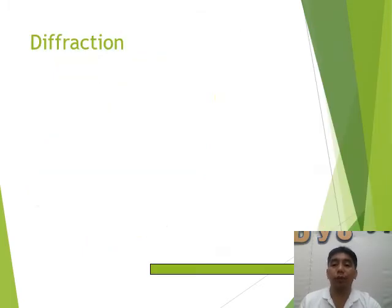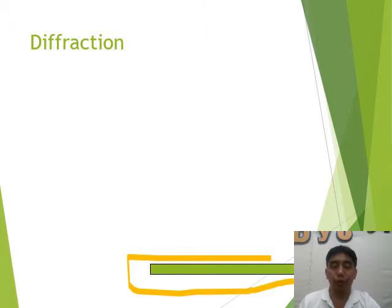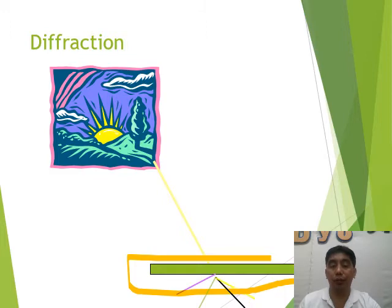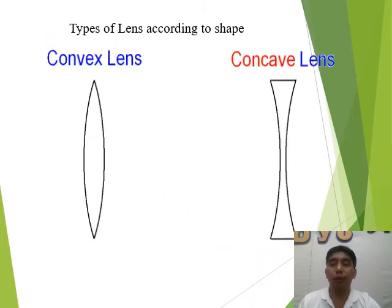Another behavior is diffraction. Diffraction occurs when, for example, the edge of a reflective or glass-surfaced table is involved — the ray of light hits that surface, some rays are reflected, and some are transmitted. We call that diffraction.